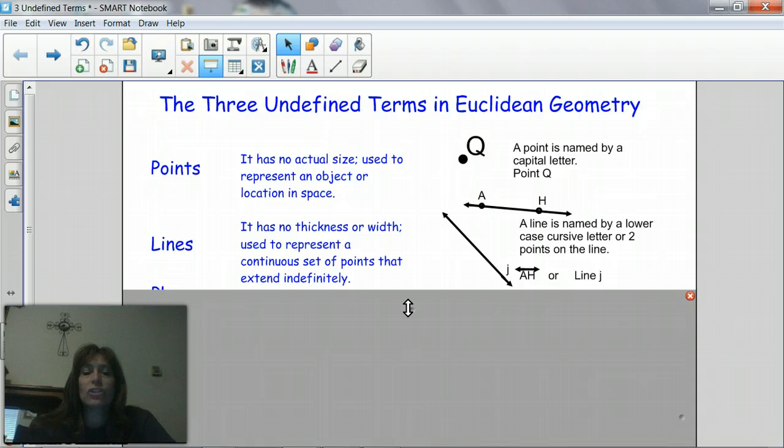Lines are actually one-dimensional, they only have length, so they can have so much distance but remember a true line goes on forever.